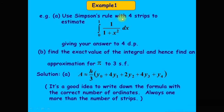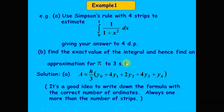For example, use Simpson's rule with four steps to estimate the integration from zero to one of the function 1 over (1 + x²) with respect to x. Give the answer to four decimal places, find the exact value of the integral, and hence find an approximation for π to three significant figures.